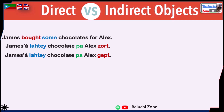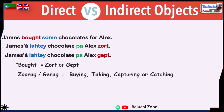In Bellucci we translate 'bought' as 'zort' or 'gipt.' They are both the past tense of 'zurag' and 'graag.' For the sake of keeping it simple, both zurag and graag can often translate as buying, taking, capturing, or even catching.